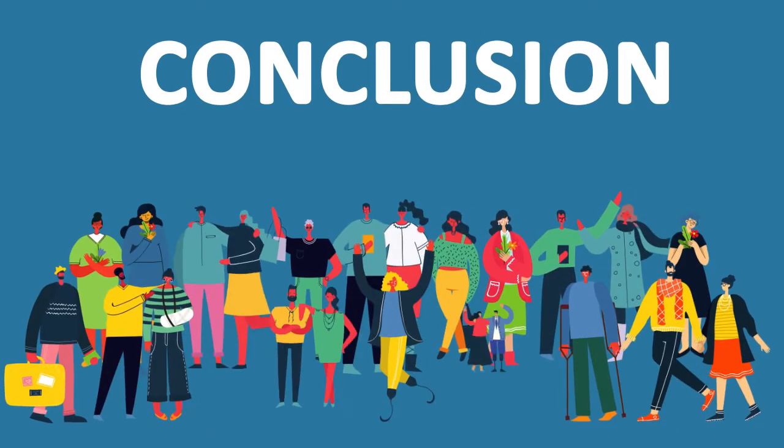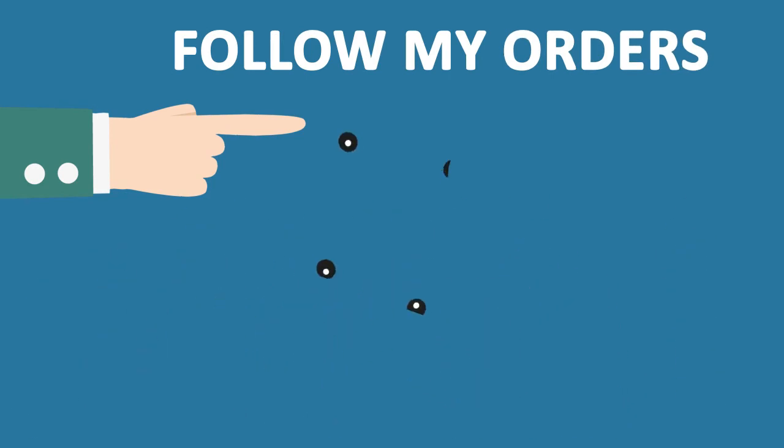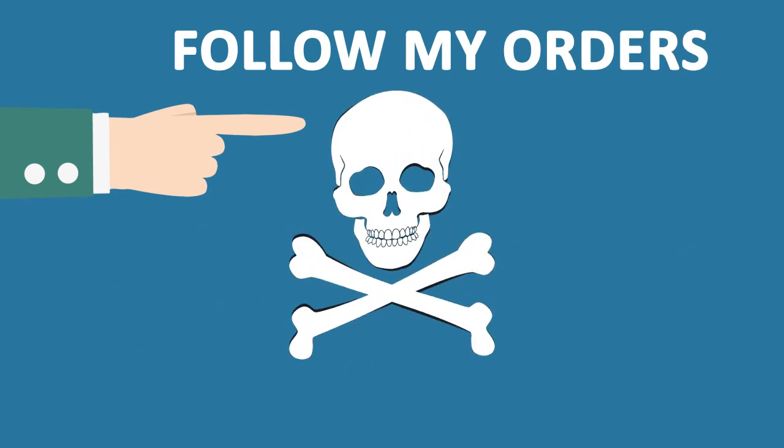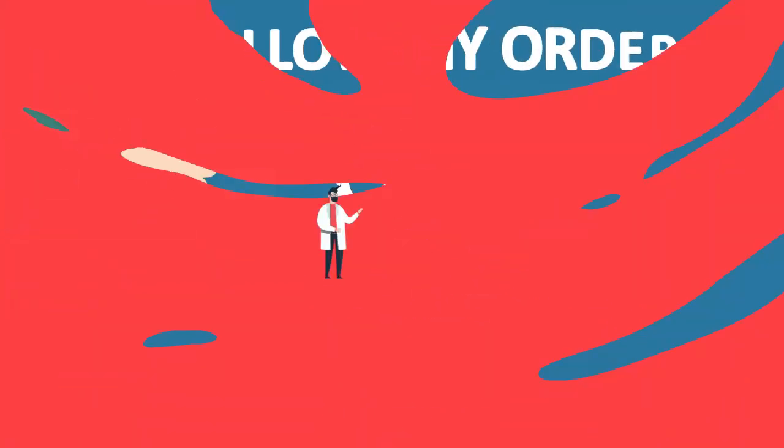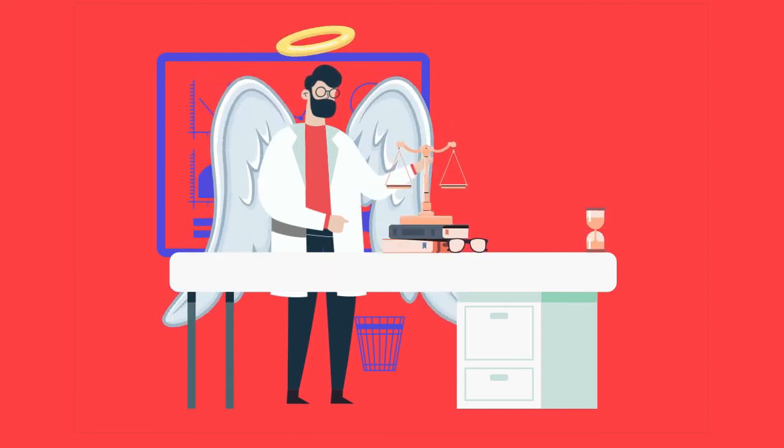Ordinary people are likely to follow orders given by an authority figure, even to the extent of killing an innocent human being. People tend to obey orders from other people if they recognize that their authority is morally right or legally based.